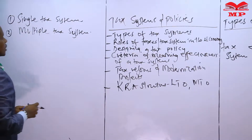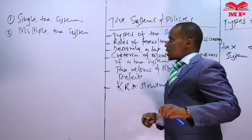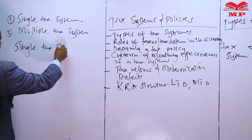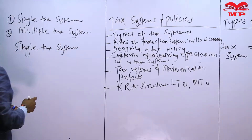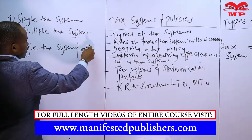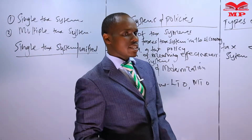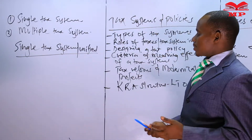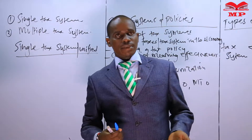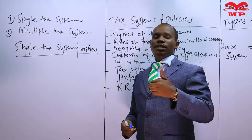These are the major tax systems that a country can adopt. Let's start with the single tax system. Sometimes you can find a school of thought referring to this as the unified tax system — since 'uni' means one, unified means one. So a unified tax system can also be referred to as a single tax system. A single tax system is a kind of tax system whereby there is only one tax that needs to be paid by taxpayers to the government.